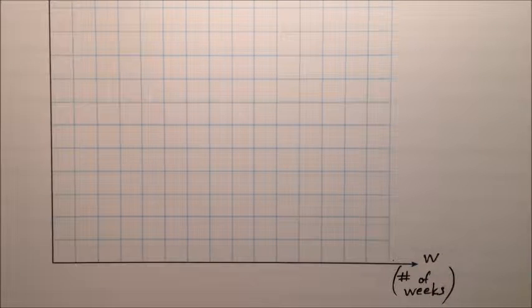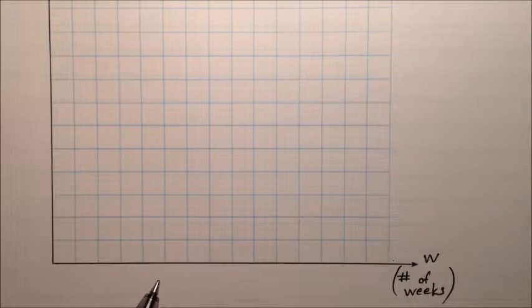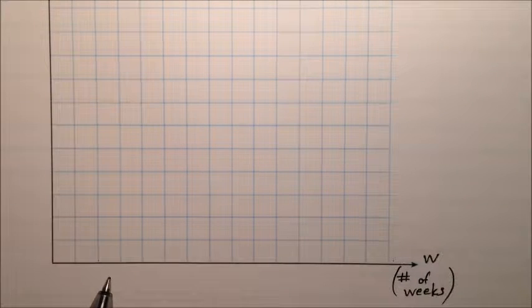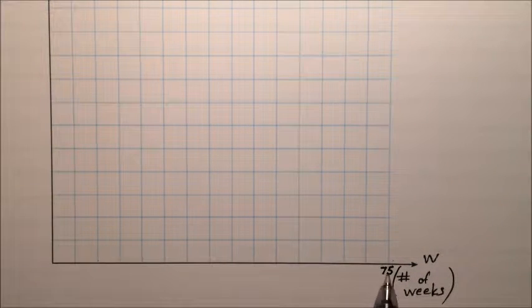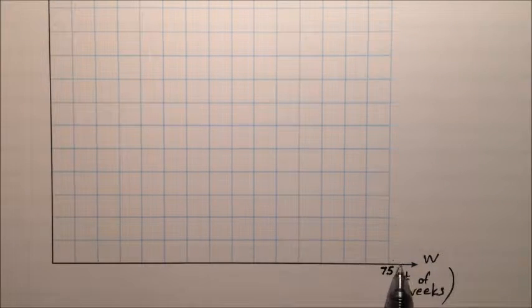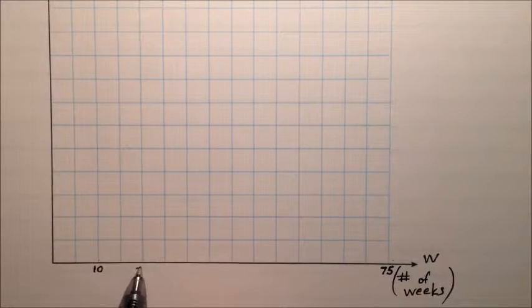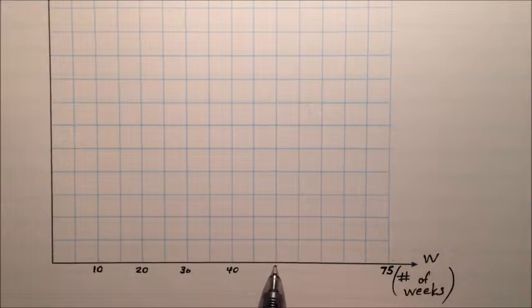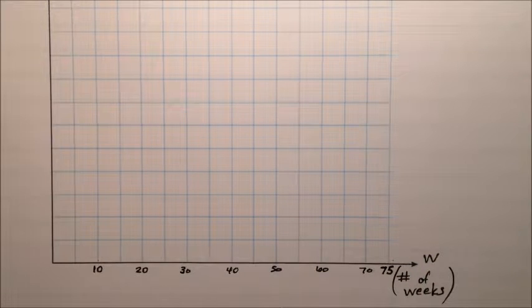So the number of weeks, we know one of the questions was after one year, that's 52 weeks. We could go a little further than that. Let's just go 75 weeks, just for giggles. And I know that 75 is divisible by 15, five times. So this would be 10, 20, 30, 40, 50, 60, 70, and then we have 75 right there, which is the end.